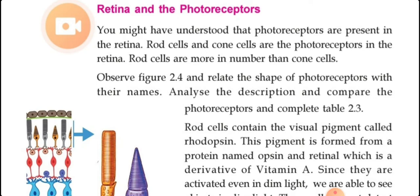So look here — retina and photoreceptors. When we discussed about the parts of the eye, we have seen the third layer or the innermost layer of the eye that was called retina, and that was the screen in the eye. We also discussed that the retina includes the photoreceptors — receptor cells seen in the eye that help for the process of vision. Today we are going to discuss what are the photoreceptors, their features, and their functions.